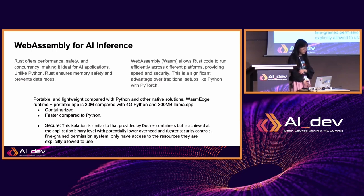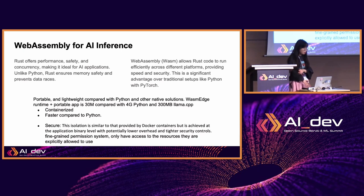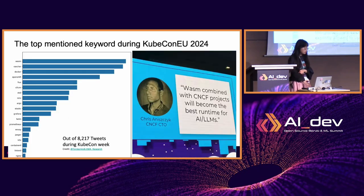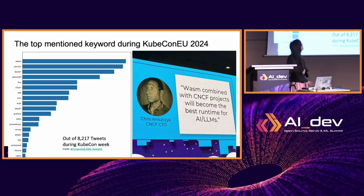WebAssembly is also secure. This kind of isolation is really similar to that provided by Docker, but it's achieved at the application binary level, giving lower overhead and tighter security controls — very fine-grained security. You need to declare access to certain resources; otherwise it has no access at all. WebAssembly was also the top-mentioned keyword at KubeCon 2024 in late March — you can see it's the first bar, far more mentioned than other keywords.